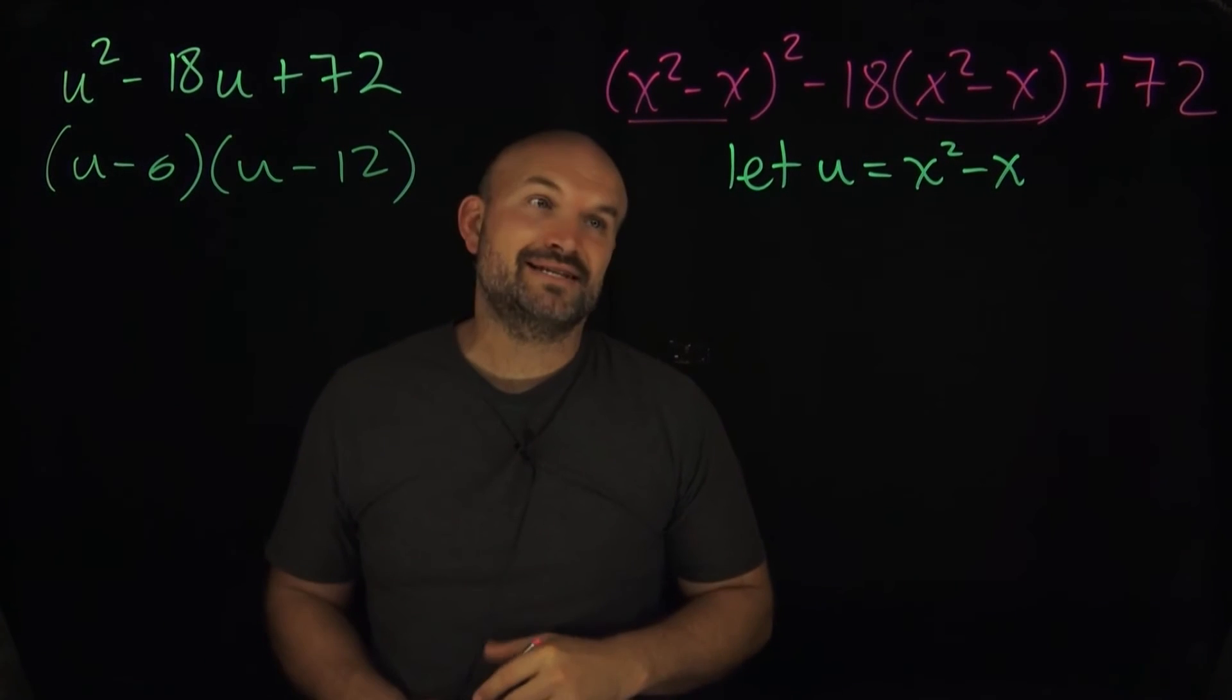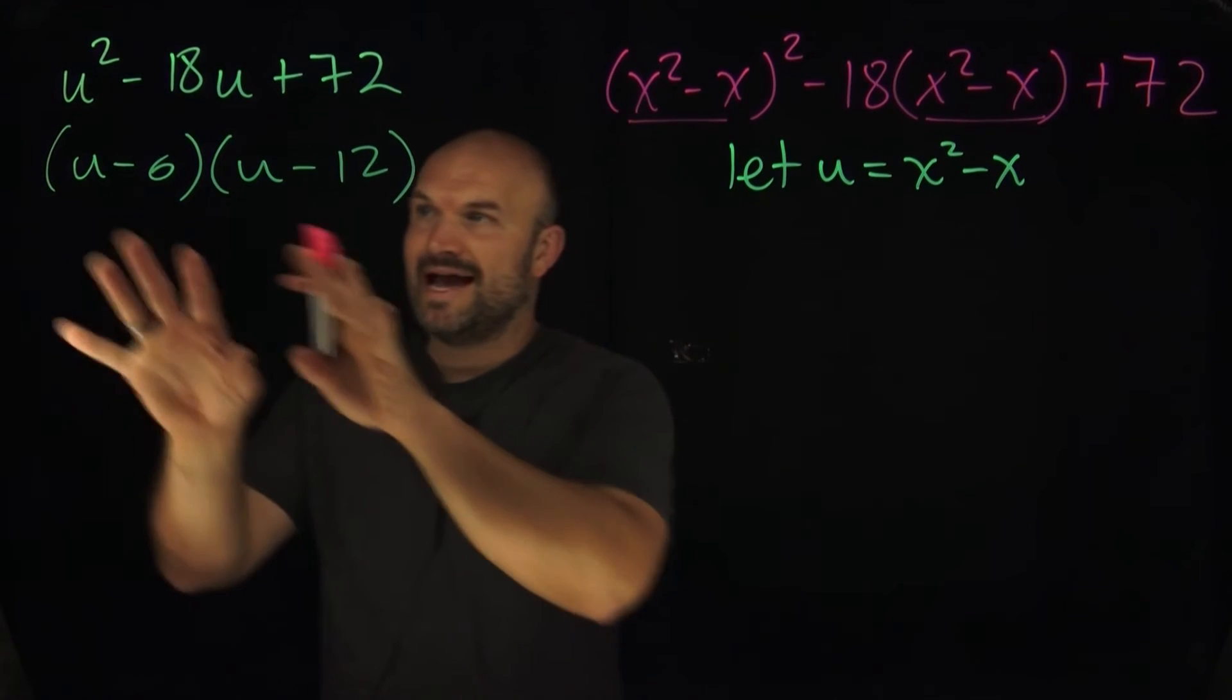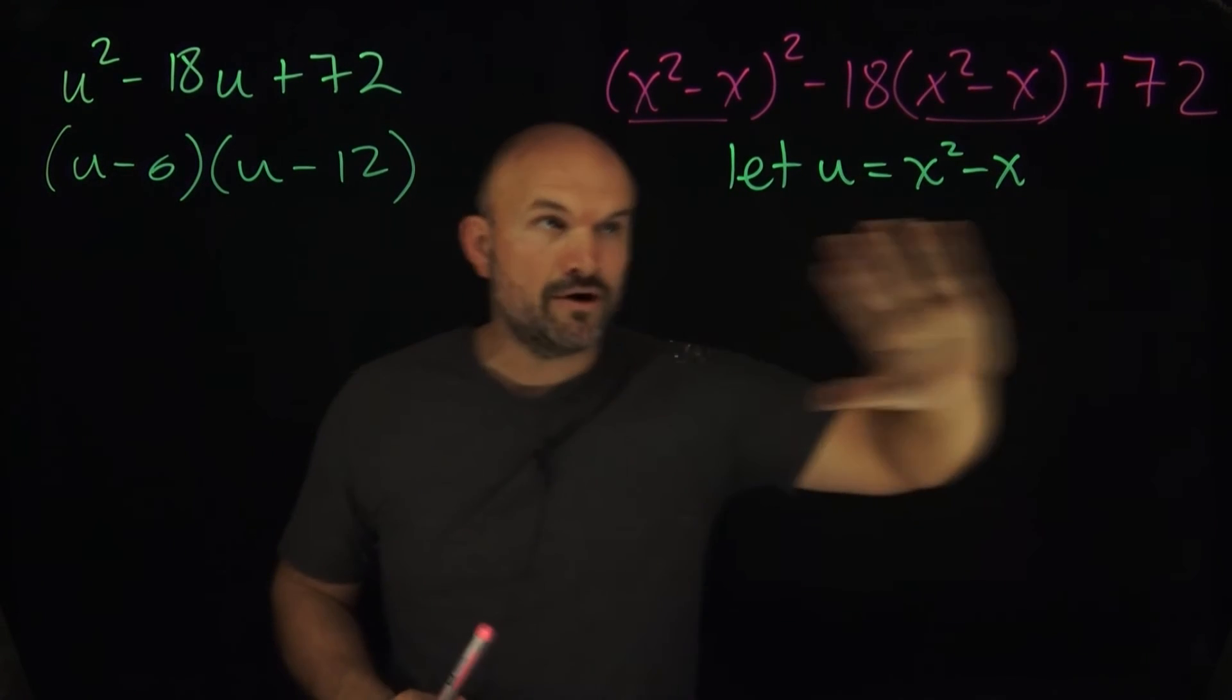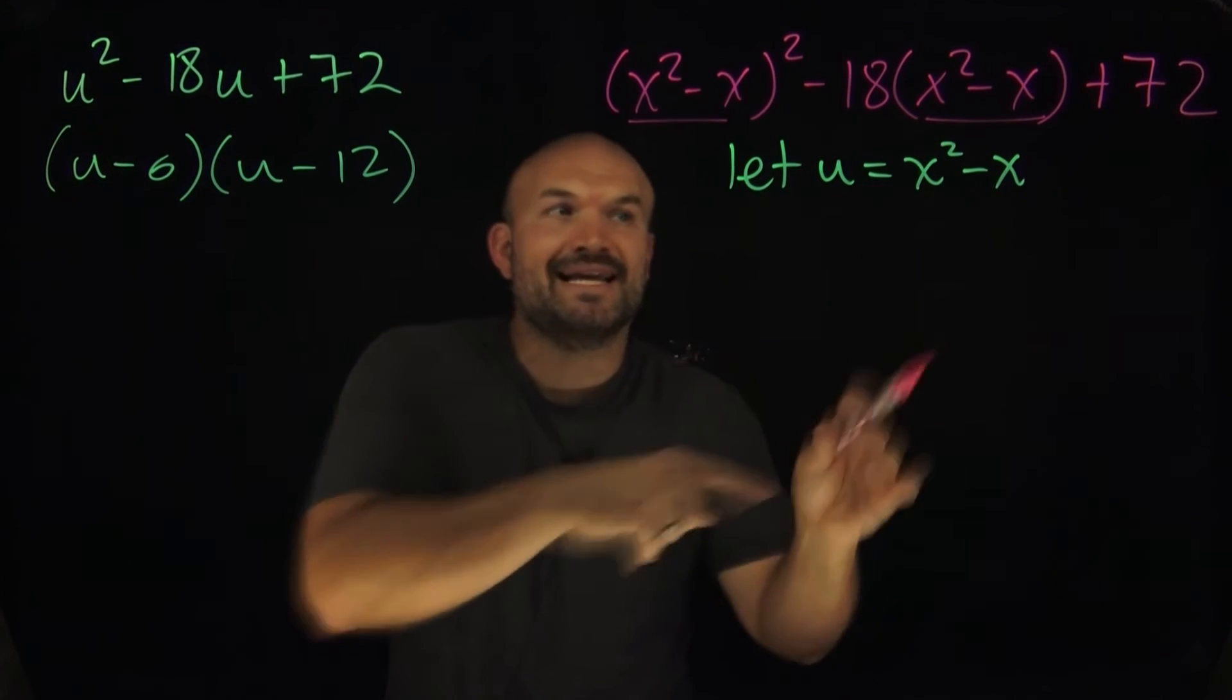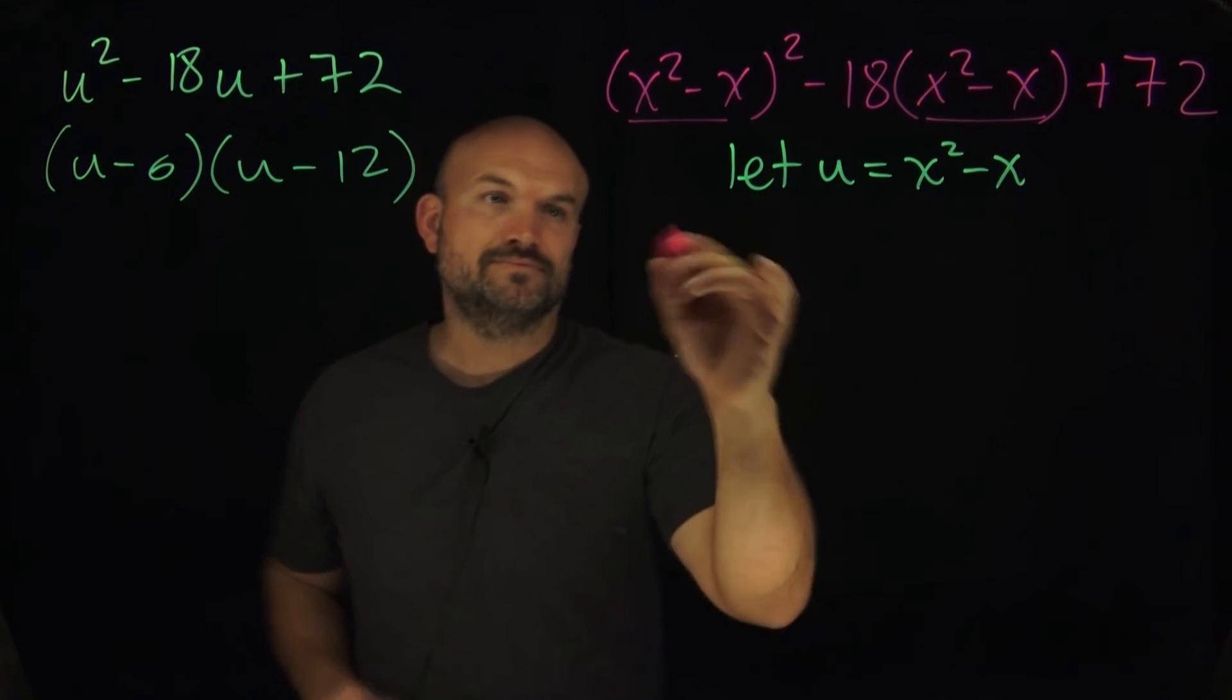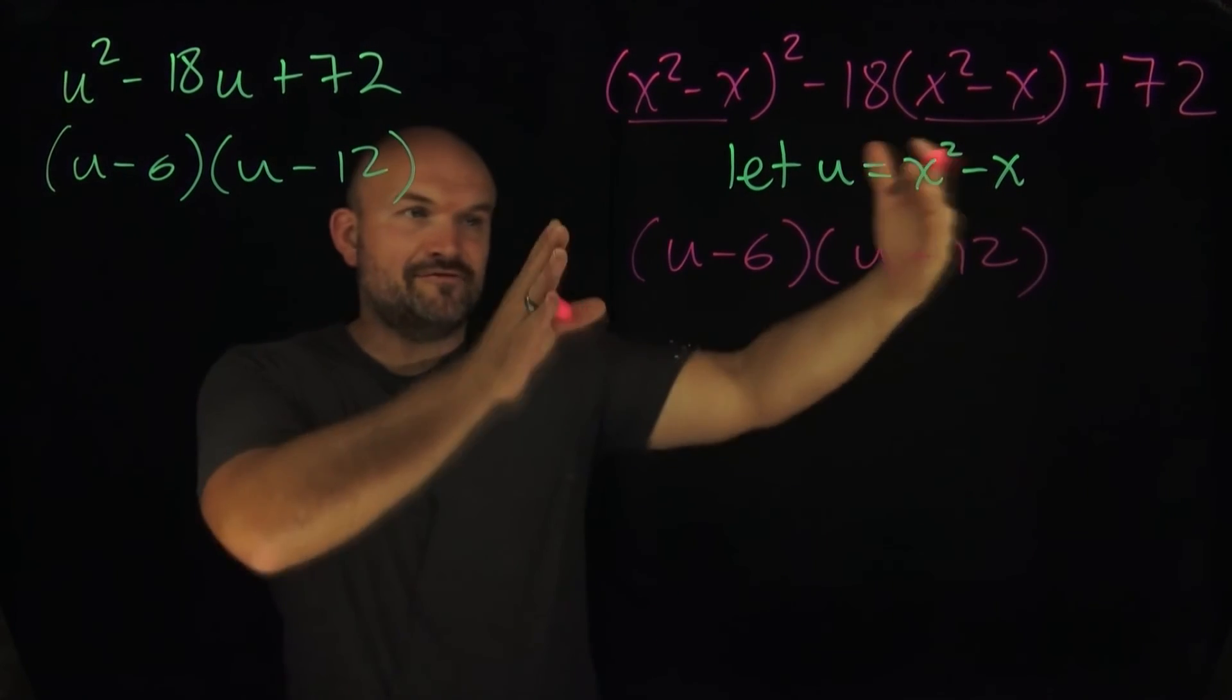Okay so here is where things can get interesting. I have (u-6) times (u-12). I'm gonna go ahead and rewrite that over there, and then what I'm gonna do is I'm just gonna now plug back in the x²-x in for the u.